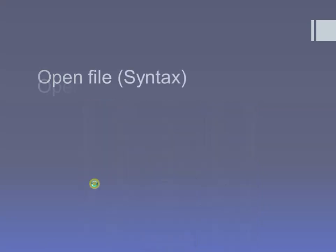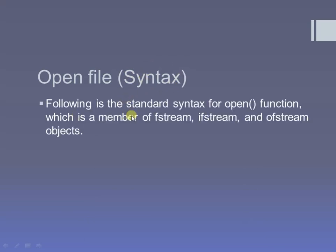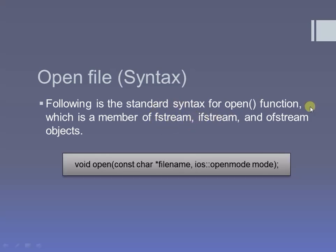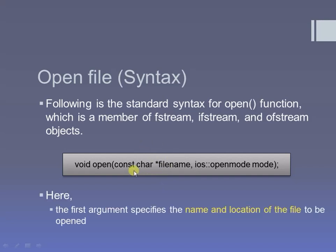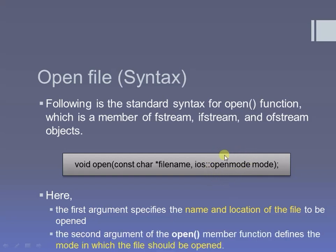The syntax for opening a file: open is a member function of fstream, ifstream, and ofstream. According to your purpose you finalize which stream to use. The open function takes two parameters: first is the file name with the path or location, and second is the opening mode. The opening mode must be known before using this open function.